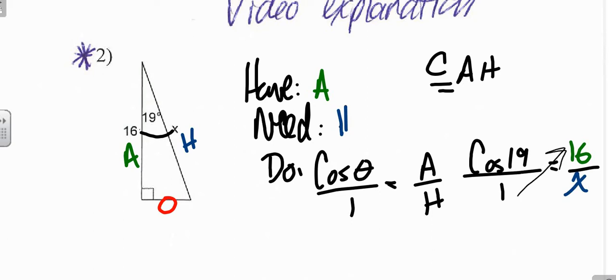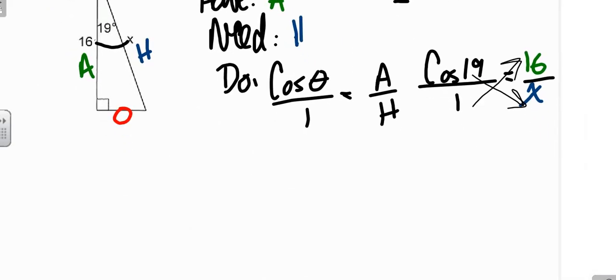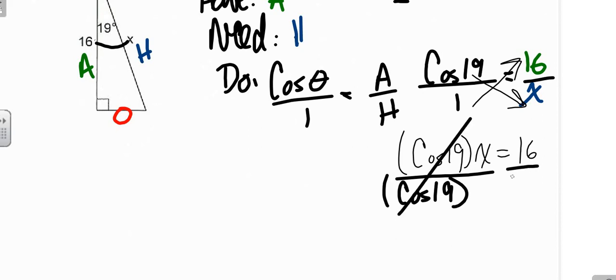Cross multiply. Don't touch a calculator until your x is by itself. You're going to have cosine 19 times x equals 16. You're still not done here. We need to divide out the cosine 19. So your x is 16 divided by the cosine of 19. Now that your x is by itself, now you may get a calculator.